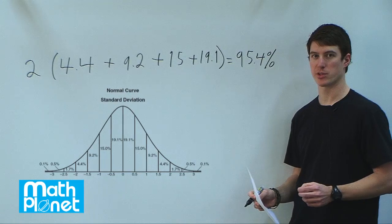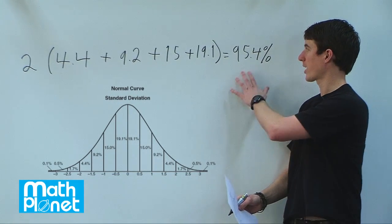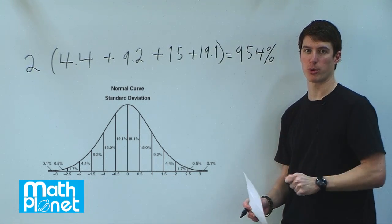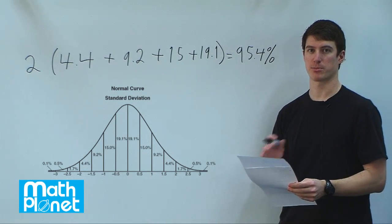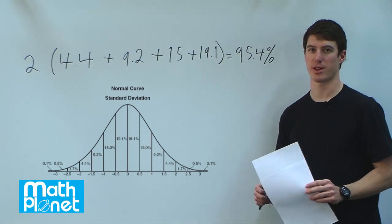So within two standard deviations of the mean or average, we're talking about 95.4 percent of whatever statistical distribution we're discussing.